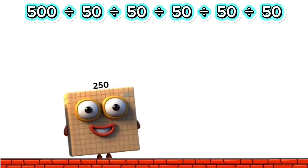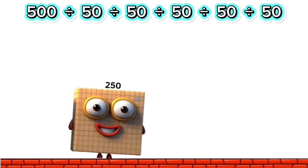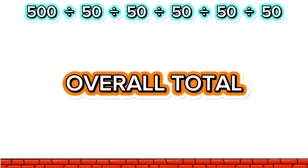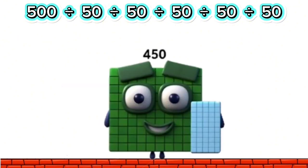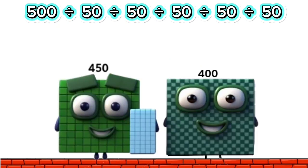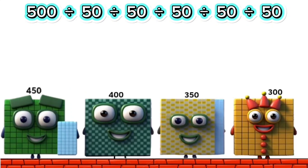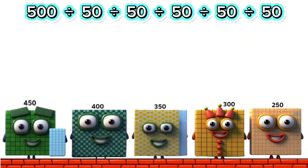250,000. Overall total: 450,000. 400. 300,000. 350,000. 300,000. 250,000.